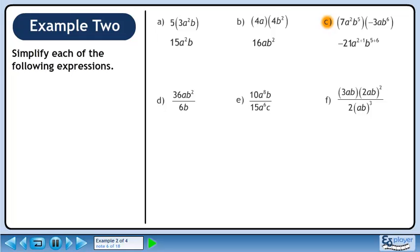When we multiply the powers of b, we can add their exponents too. The answer is minus 21a cubed b to the power of 11.